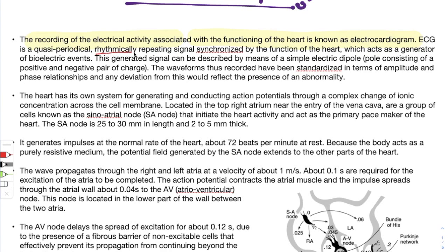The ECG signal is synchronized by the function of the heart, which acts as a generator of bioelectric events. Bioelectric events are events generated inside a living organism — the electrical impulses generated from different organs. For example, the heart is beating and generating some kind of energy in the form of electrical signals, which we are going to record.